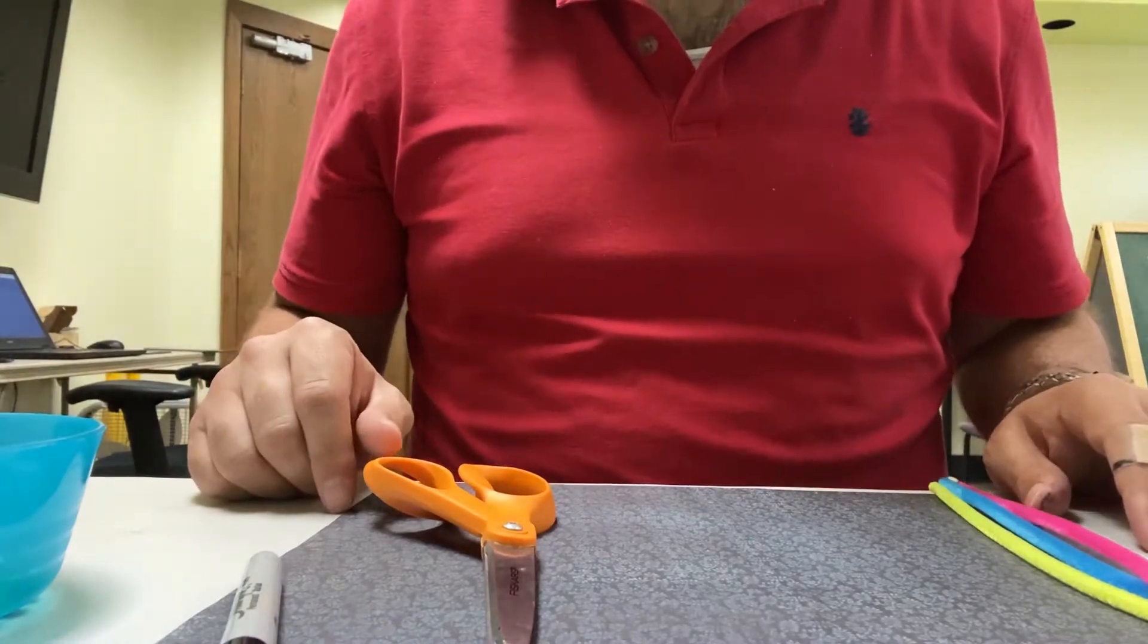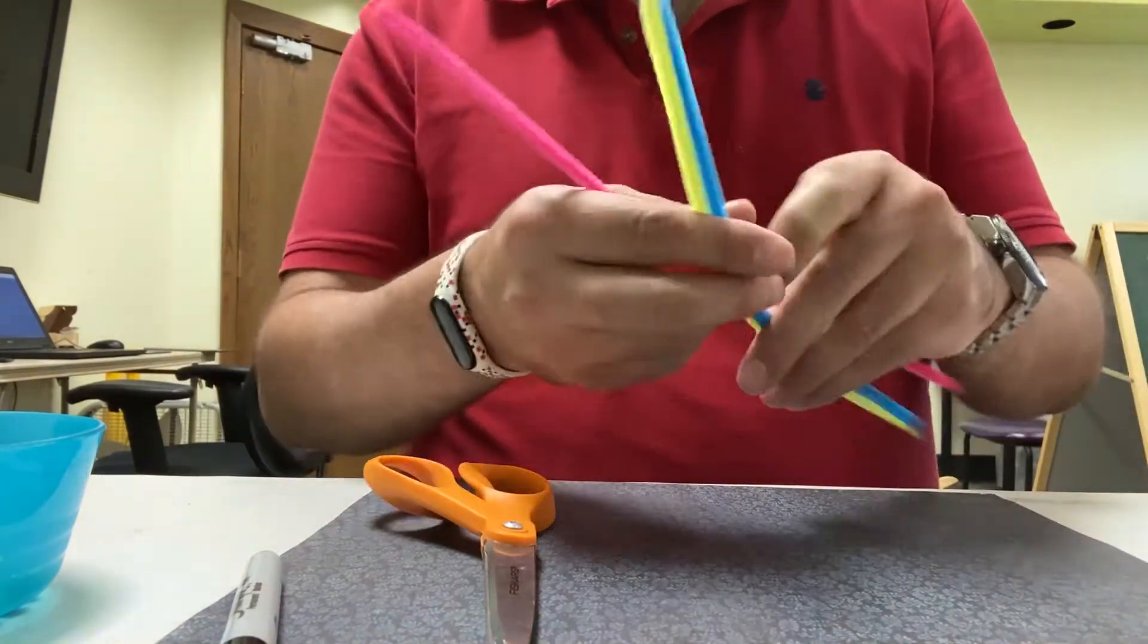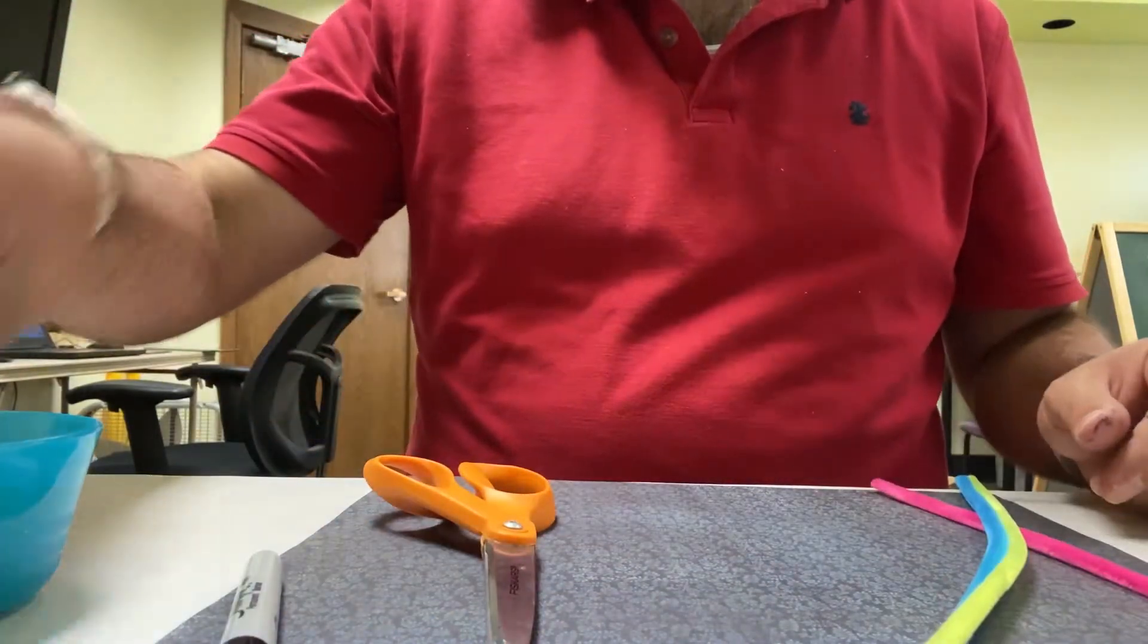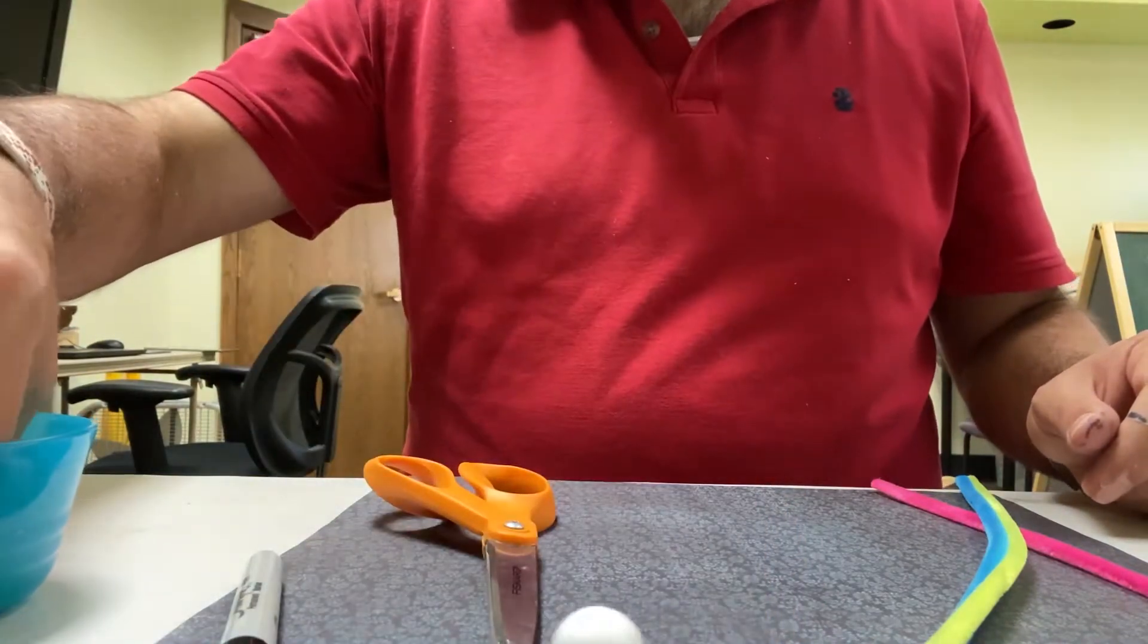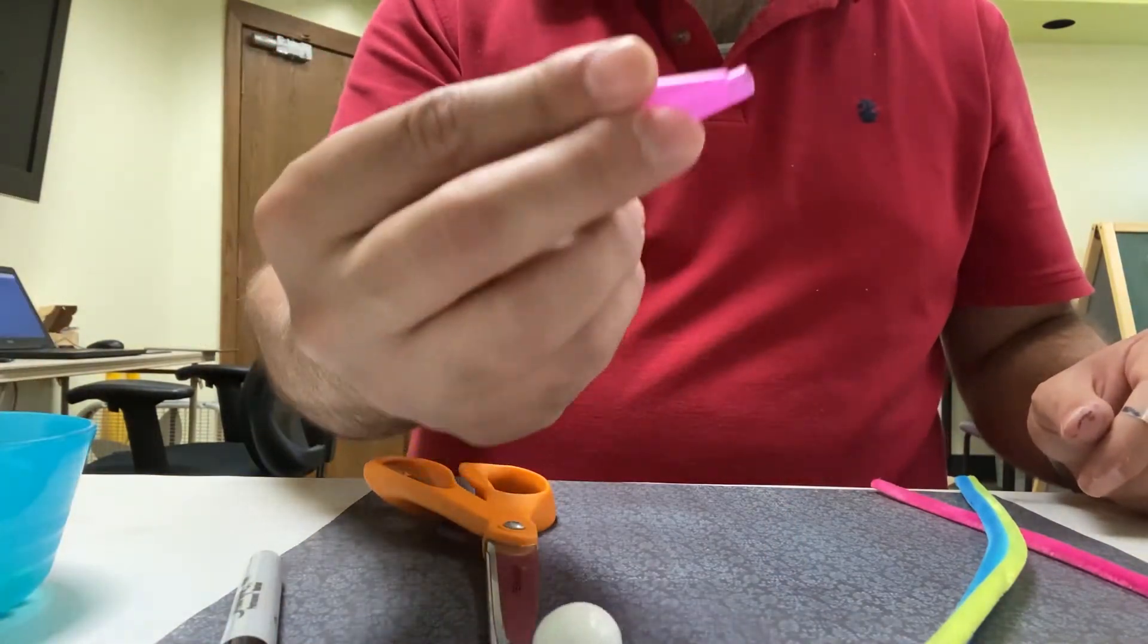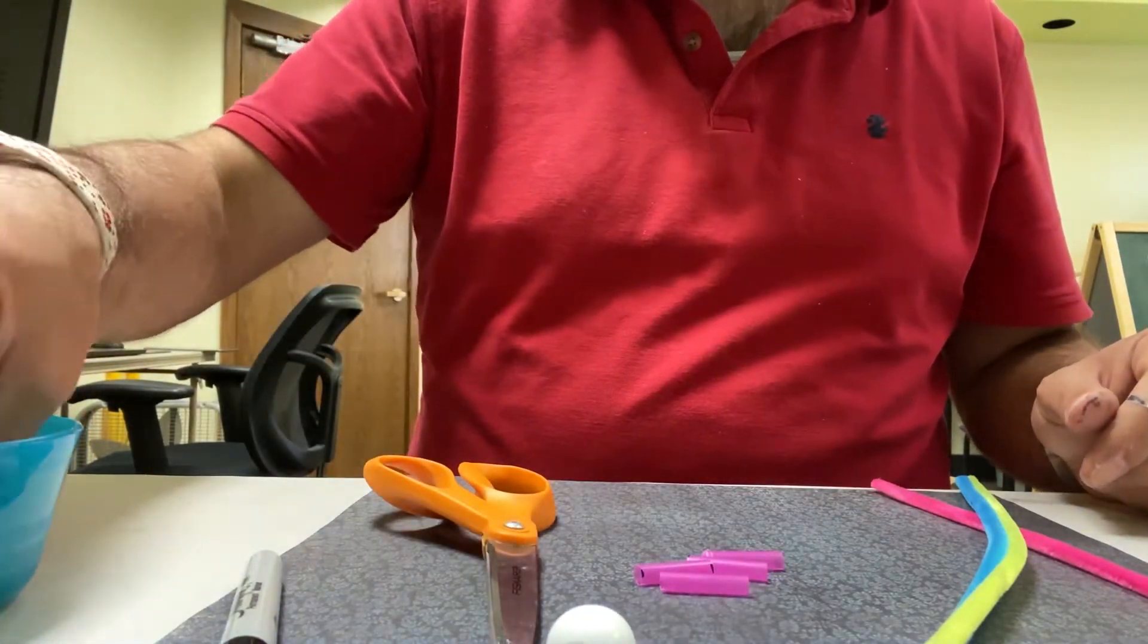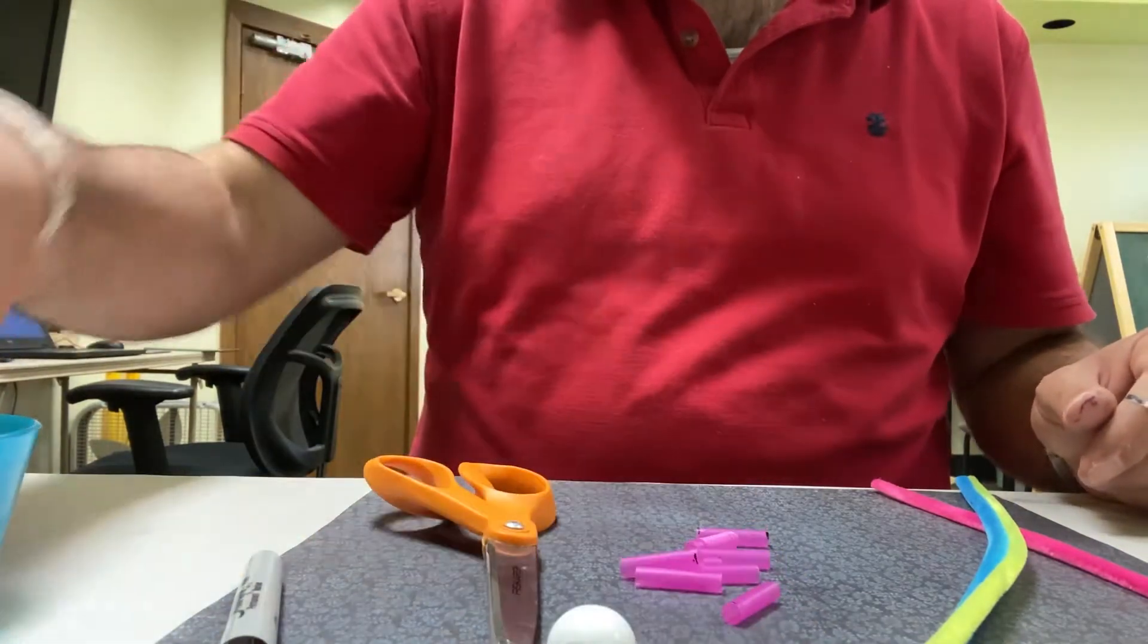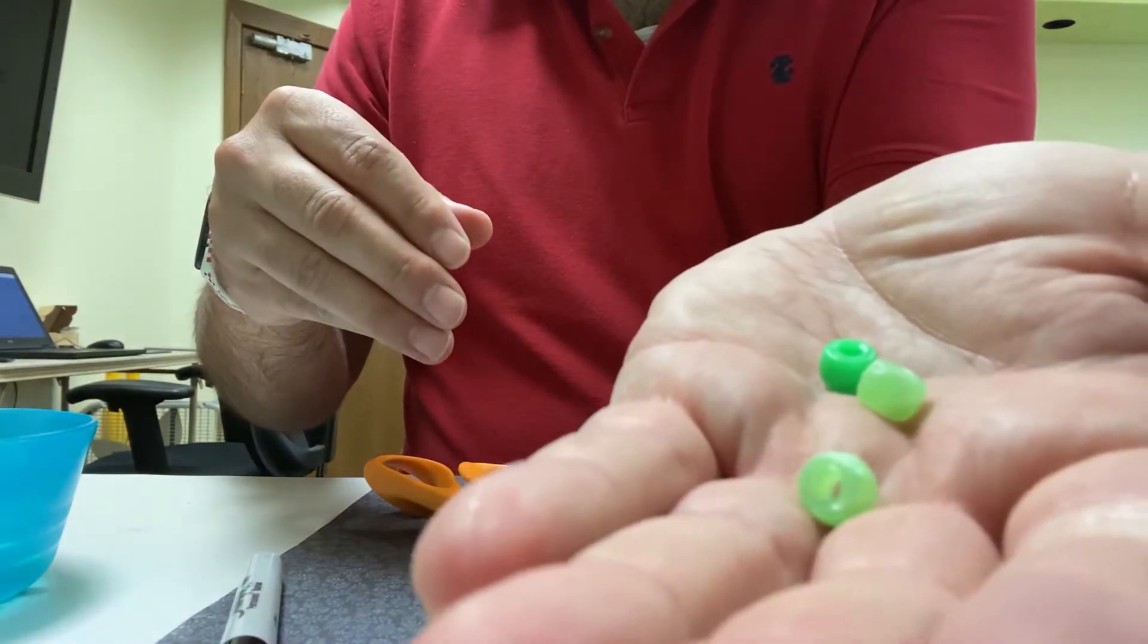Hello everyone. Today we'll be making pipe cleaner ninjas. Now in your kit you will receive three pipe cleaners, a big bead, some small pieces of straw, and 15 pony beads.